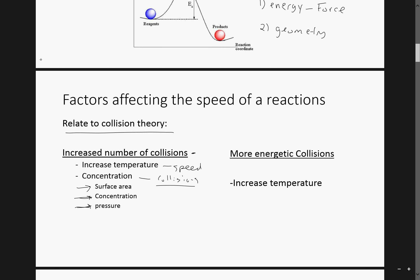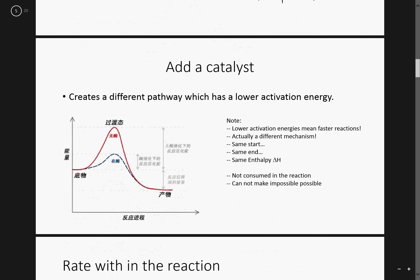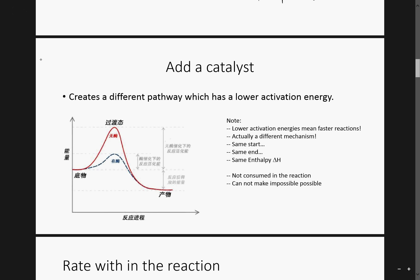More energetic collisions — so the number of collisions and then the energy of those collisions. This would be solely based on whether two particles have more force when colliding, and this involves temperature. So temperature can affect two things: not only the number of collisions, but also the impact of those collisions. A catalyst — another way of increasing a chemical reaction speed — creates a different pathway which has a lower activation energy.